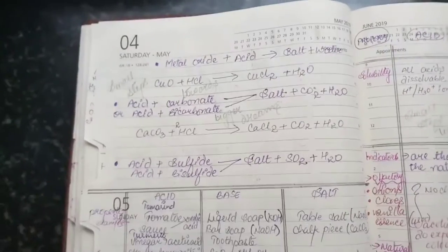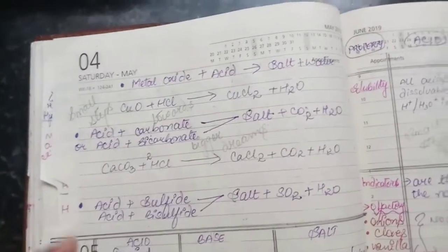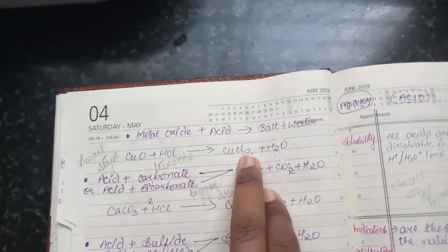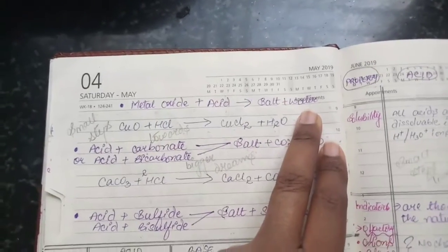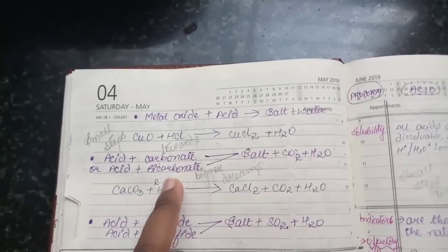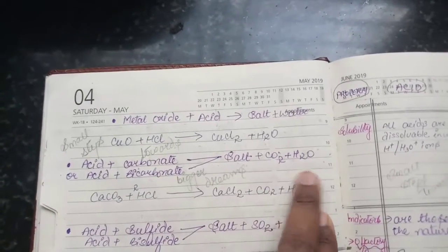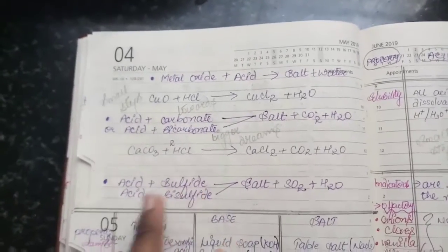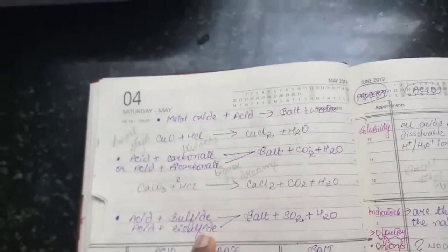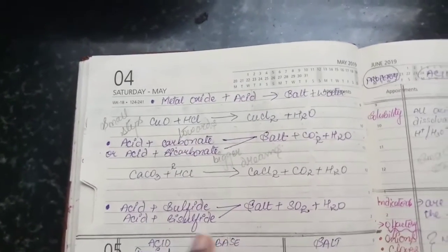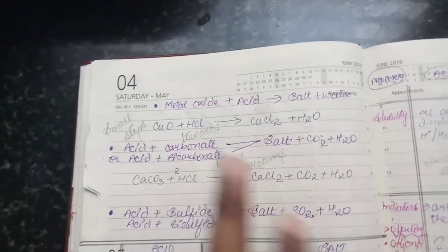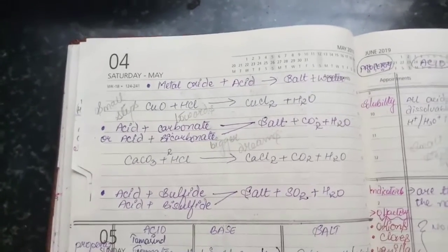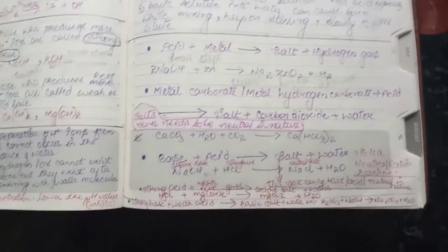This and this is not given in some book, this is given in some book. That's the reason I have made note of all of this. Metal oxide plus acid is giving you salt plus water. And acid carbonate and acid bicarbonate is giving you salt plus CO2 plus H2O. This is the example of that one. Acid plus sulfide or acid plus bisulfide. Bisulfide or bicarbonate can also be written as hydrogen sulfide and hydrogen carbonate. So it's going to give you salt plus CO2 plus H2O. I hope you guys are understanding it.